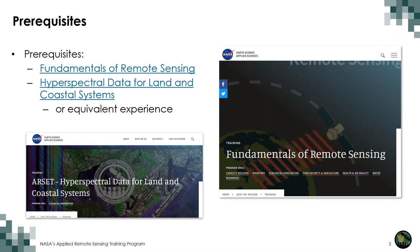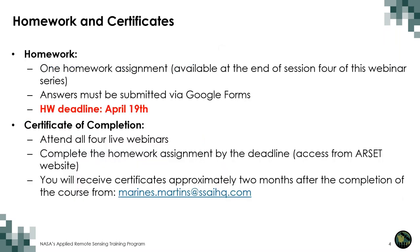The two prerequisites for this training include an understanding of the basics of remote sensing and hyperspectral data for land and coastal systems. We have our courses on those concepts listed here. For this series, we will have one homework assignment, and the link to the homework will be made available during the last session and will be due on Wednesday, April 19th. The homework will be a Google form that you submit online. If you attend all the sessions and complete the homework by the deadline, you will receive a certificate of completion, but please be patient as it takes a couple months to process and send out these certificates.